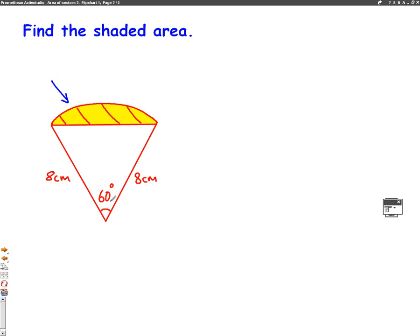So the fraction is 60 out of a whole circle, which would be 360 degrees. So the fraction of a circle we've got here in this whole outside shape is 60 out of 360. And because we're looking at the area of a whole circle, then the formula is 60 out of 360 pi r squared.